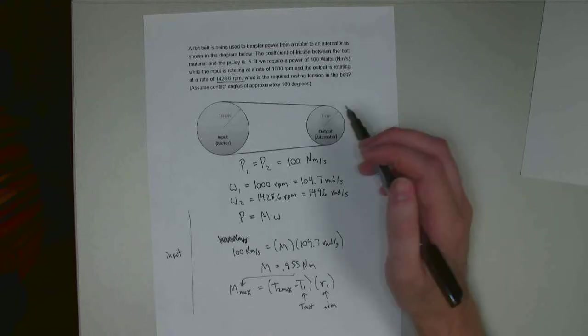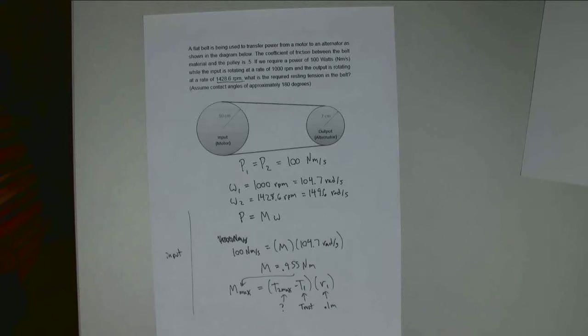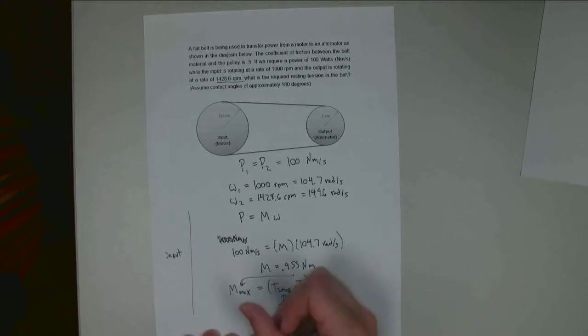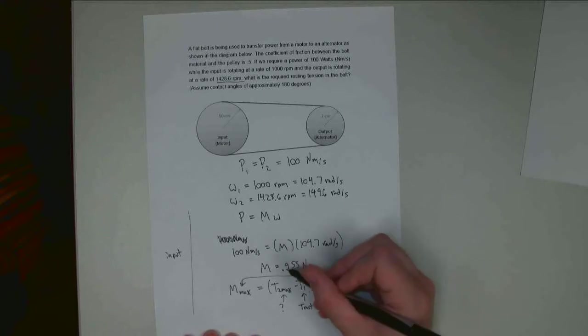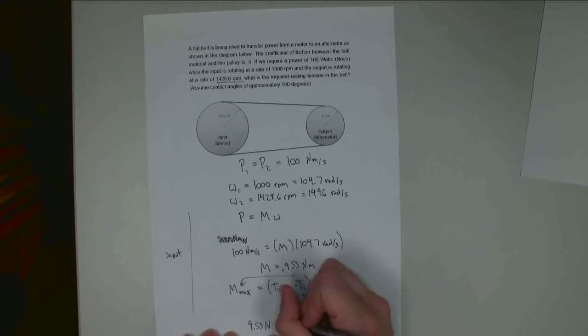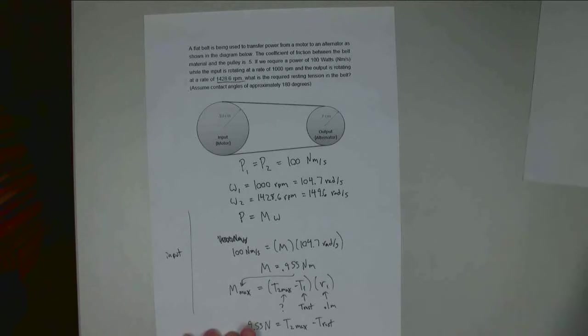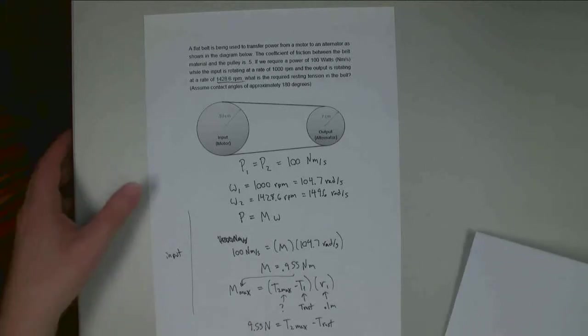So, since I also don't know this T2 max, I can only solve for the difference. So I can solve and say that, I'm going to bring basically .955, multiply that by .1. I get 9.55 newtons is going to be the difference between T2 max and T rest. So I know one relationship there.